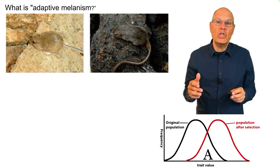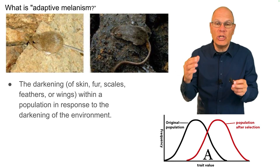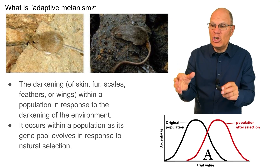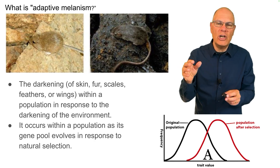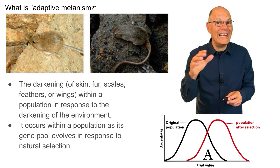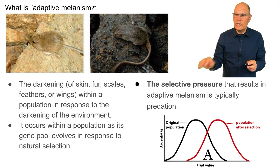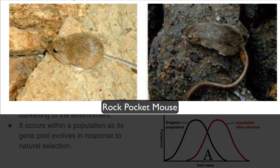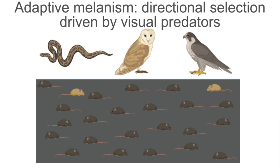An important type of directional selection is adaptive melanism — the darkening of the body within a population in response to the darkening of the environment. It occurs as the gene pool evolves in response to natural selection over evolutionary time, as genes for light coloration are selected against and genes for darker coloration are selected for. The rock pocket mouse of the southwestern United States demonstrates this: populations living on dark-colored substrate have evolved a mutation resulting in more melanin production, which spreads throughout the population.